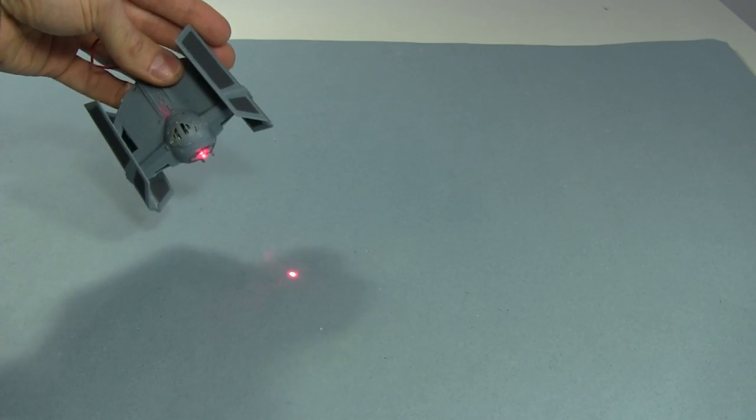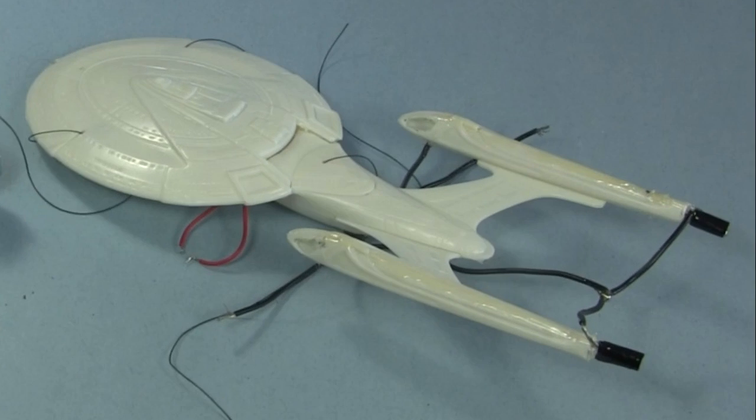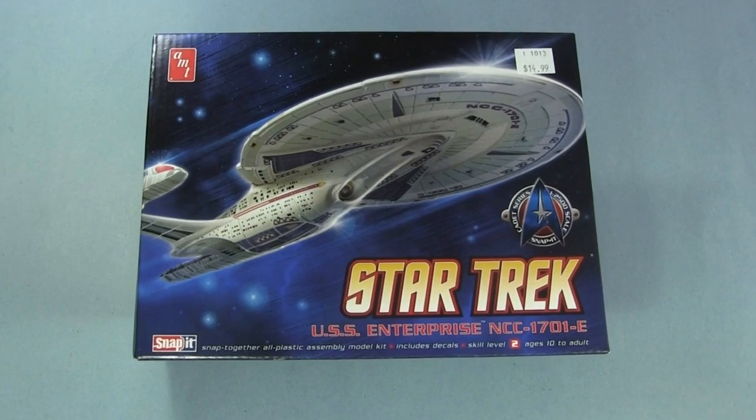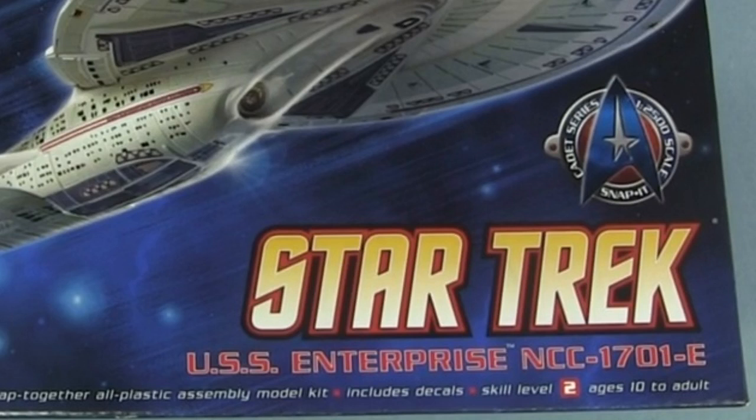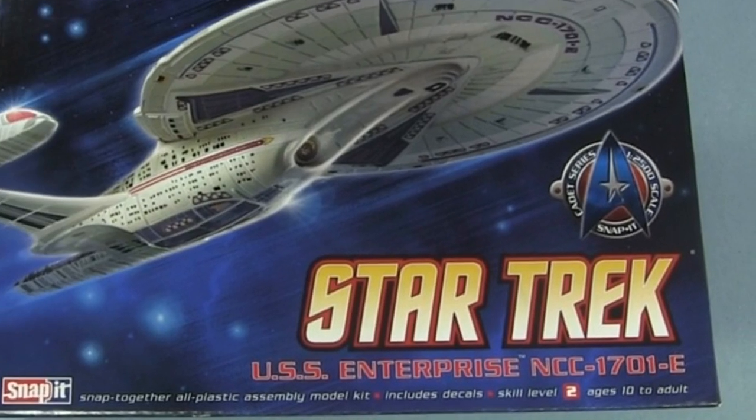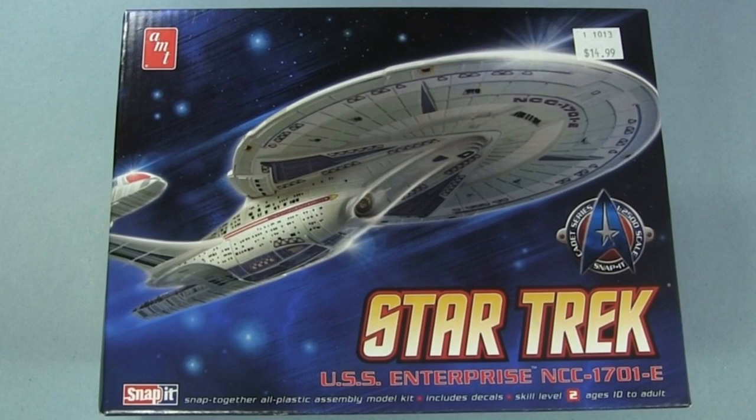But wait! There's no enemy to fire it at! That's where the Star Trek Enterprise comes in. This one is an AMT snap-it model of the NCC-1701E from the movies First Contact, Insurrection and Nemesis.